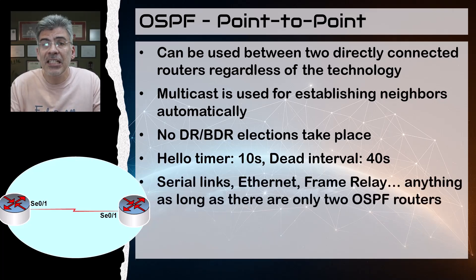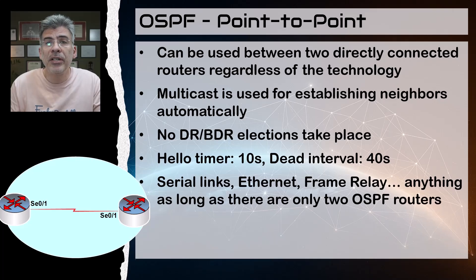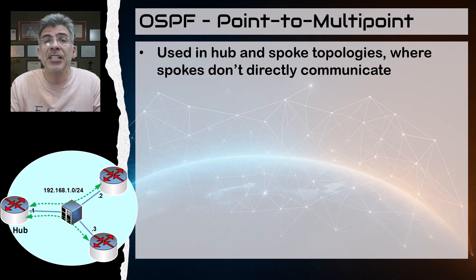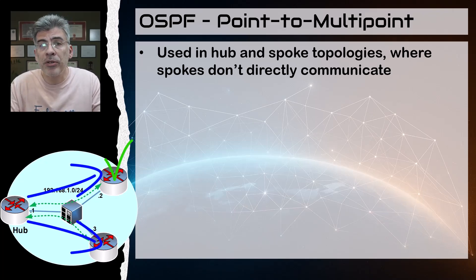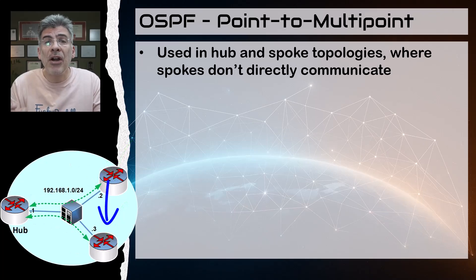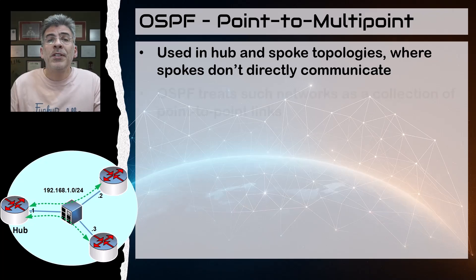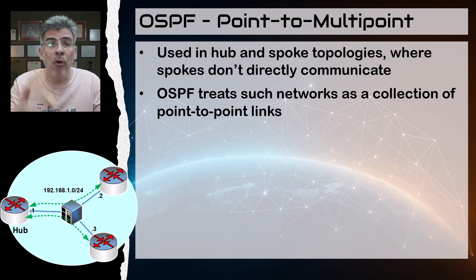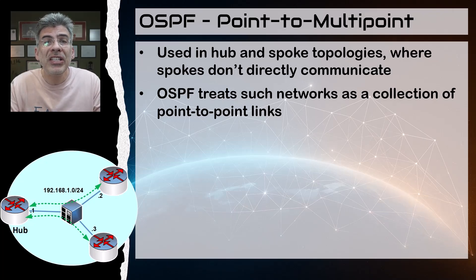The point-to-point network type has a default hello timer of 10 seconds and a dead timer of 40 seconds. Point-to-point network types are intended for use between two directly connected routers — some technologies require it, such as serial links, while others can support it but may also support other network types. The point-to-multipoint network type is designed for hub-and-spoke topologies where the hub can reach all spokes, but the spokes do not necessarily have direct communication between them. OSPF treats point-to-multipoint networks as a collection of point-to-point links.